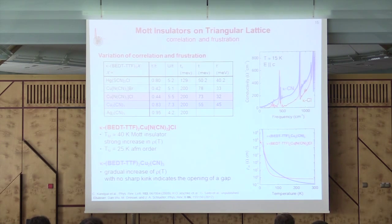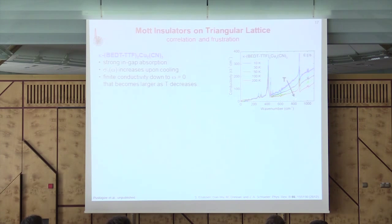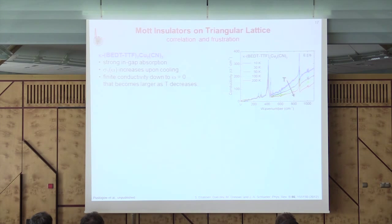Looking at the optical properties: the chlorine compound shows a Mott gap, while in the spin liquid compound there is no clear-cut gap — instead a continuous decrease of conductivity. As a function of temperature, when we cool down the optical absorption actually becomes stronger in the region where the gap is supposed to be. So there is an increase in optical conductivity as we cool down. Of course there is a crossover because the resistivity shoots up — it is an insulator — but in this frequency regime the behavior is opposite: there is additional absorption as you cool down.